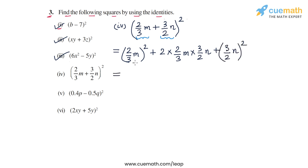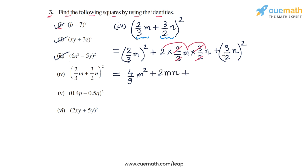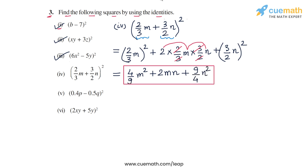Now, 2/3 m whole square will be 4/9 m squared. For the middle term, 2 times 2/3 m times 3/2 n: the 2s cancel and the 3s cancel, leaving 2 times m times n, so the second term is 2mn. The last term, 3/2 n whole square, is 9/4 n squared. So the expression 4/9 m squared plus 2mn plus 9/4 n squared is the answer for part 4.